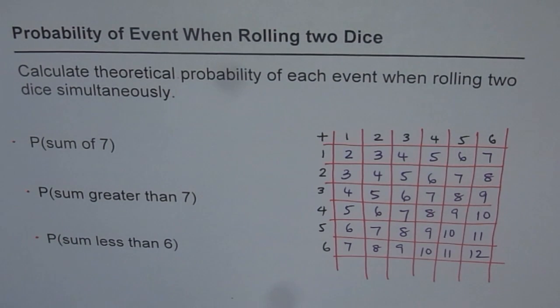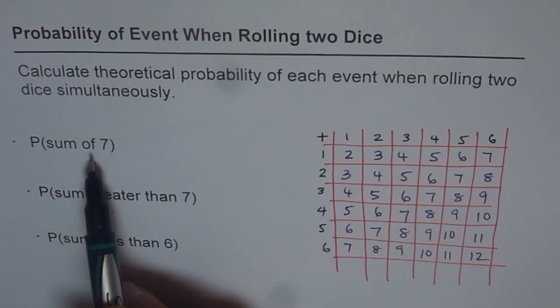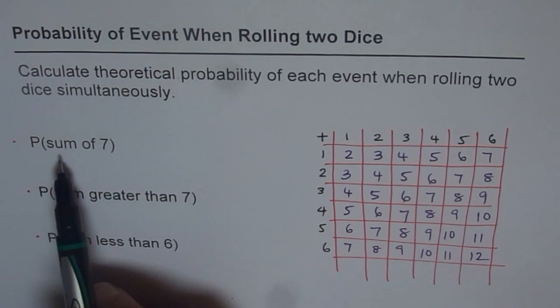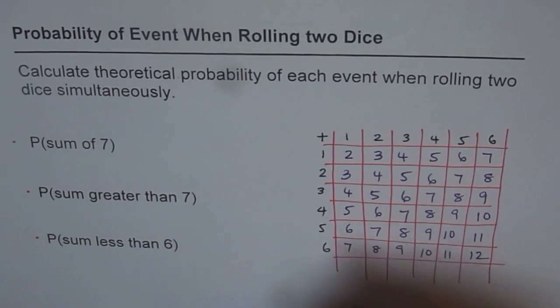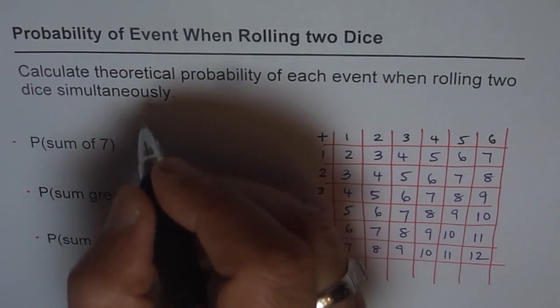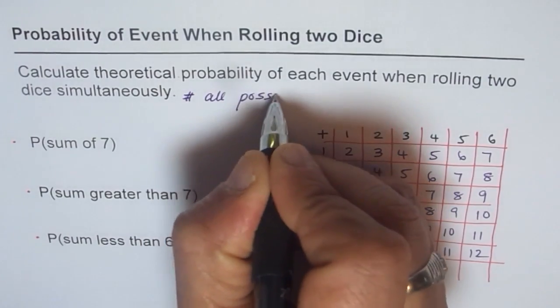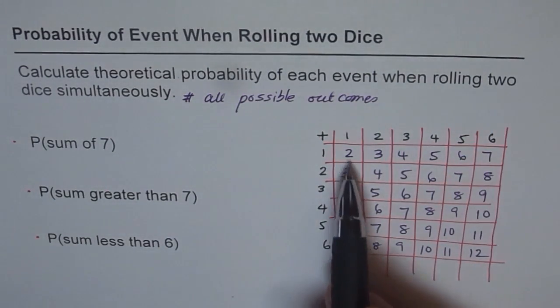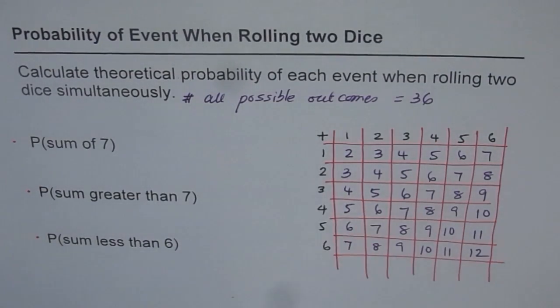Now in this particular question, we have to find the probability when the sum is seven. First, how many possible outcomes are there? We have to answer the question: number of all possible outcomes, because that goes in the denominator. It is six times six. If you count these, there will be thirty-six in all.